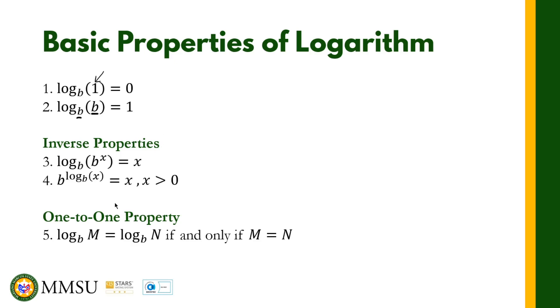We also have the inverse properties. We know that exponential functions and logarithmic functions are inverses of each other. Basically, if these two are combined together in one form, they cancel each other out.